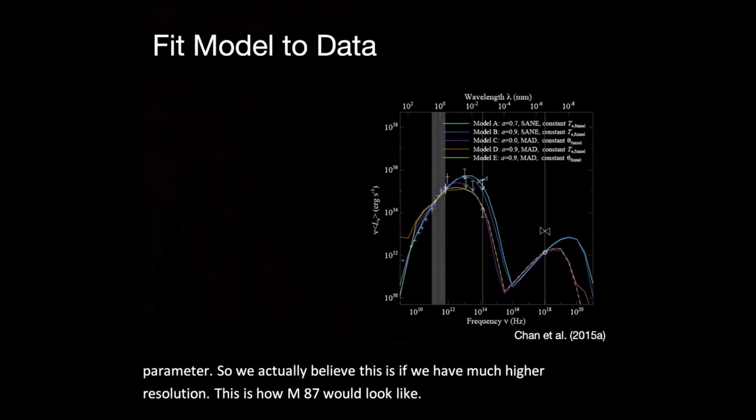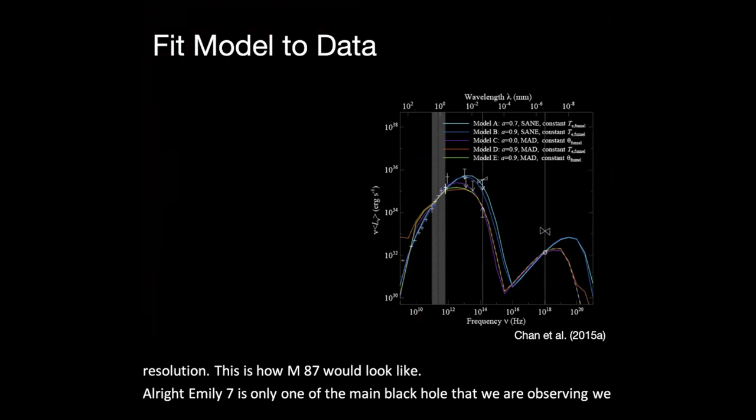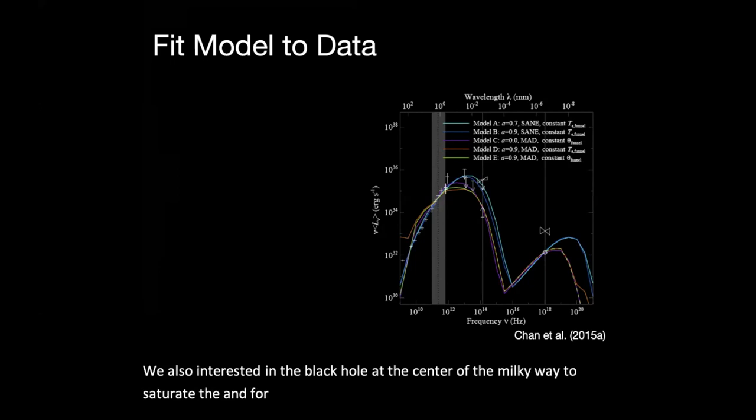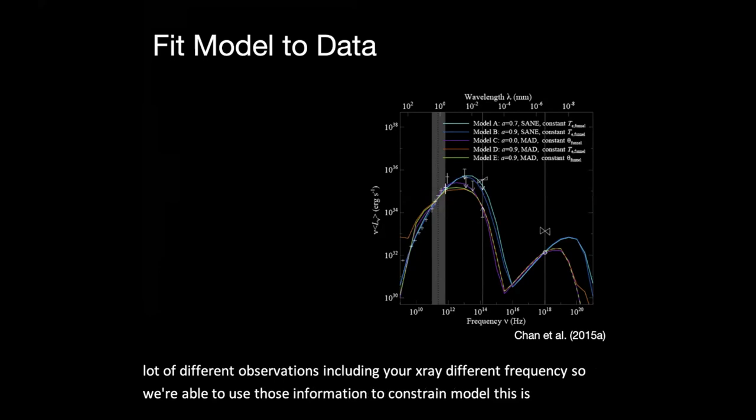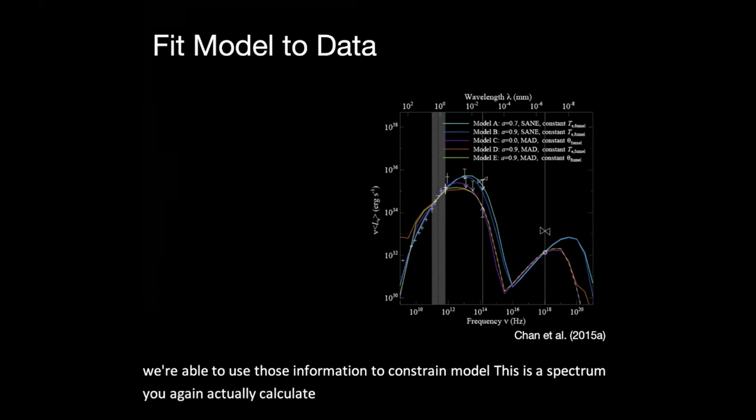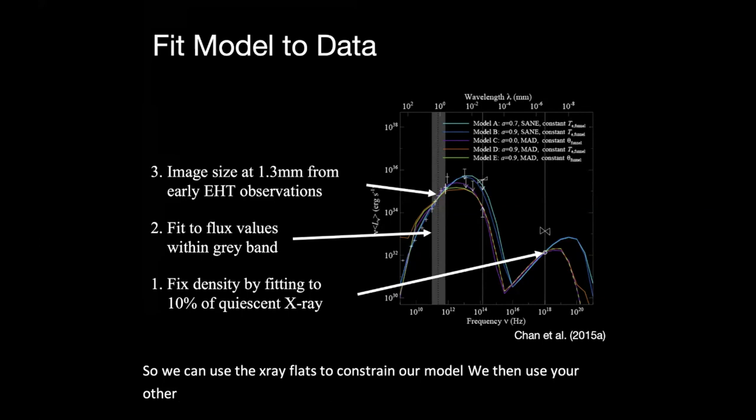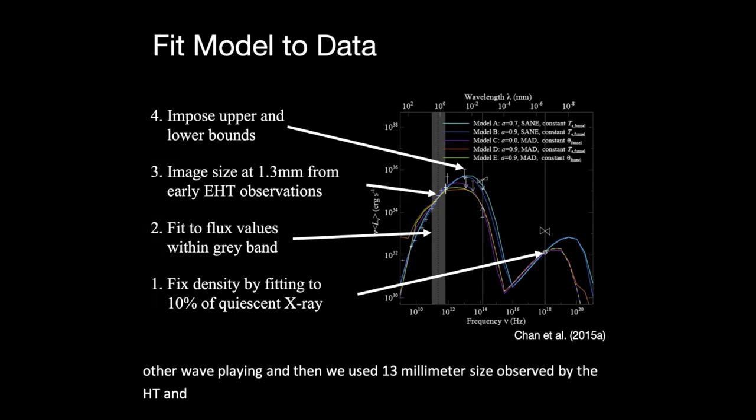Alright. So M87 is only one of the main black hole that we are observing. We are also interested in the black hole at the center of the Milky Way, the Sagittarius A*. And for that black hole is much well studied. There are a lot of different observations, including x-ray different frequency. So we are able to use those information to constrain model. This is a spectrum. Again, actually calculated by a GR ray tracing calculation. So we can use the x-ray flux to constrain our model. We then use some other wavelength. And then we've used the 1.3 millimeter size observed by the EHT. And then we also use the optical measurement constrain.